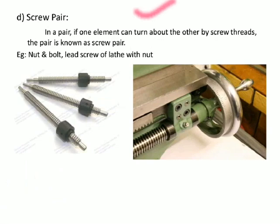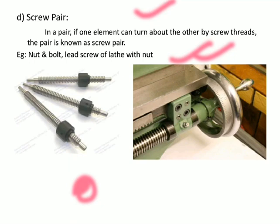A screw pair is one in which one element can turn about the other by means of screw threads. Examples include a nut and bolt, a lead screw, or a lathe with a nut. When we insert a screw into a hole using a screwdriver, the screw transmits motion through the threaded connection — this is a screw pair.